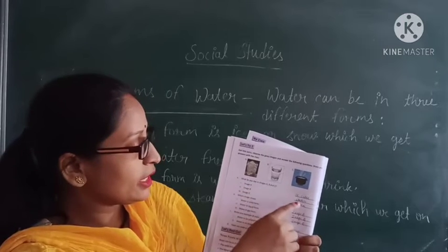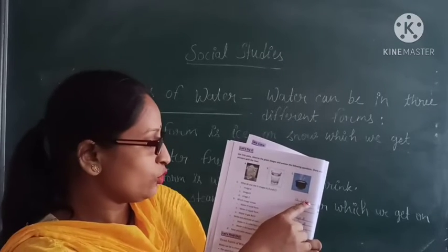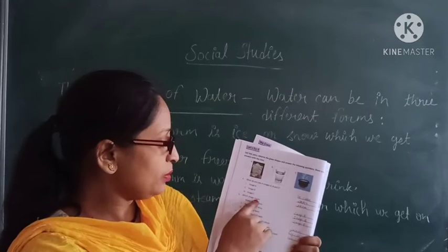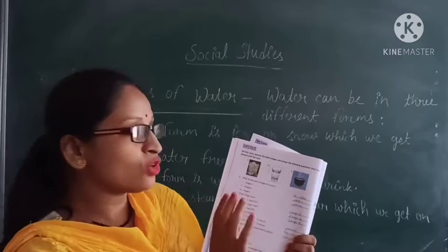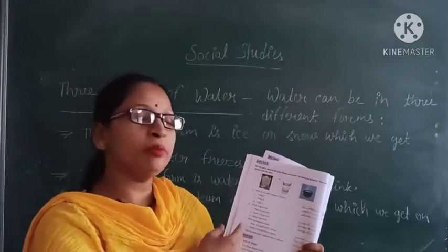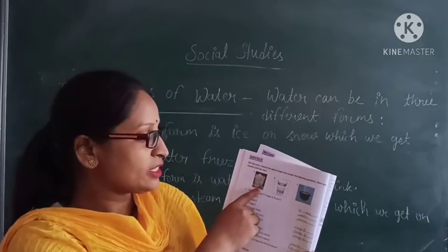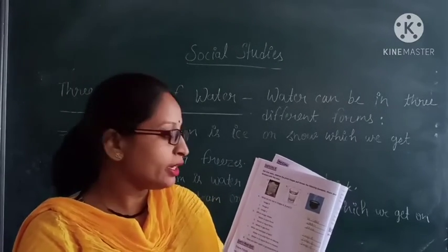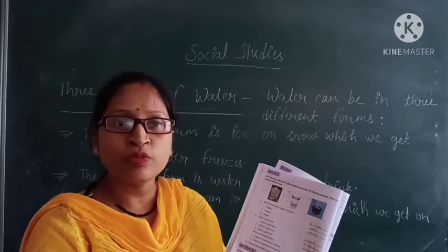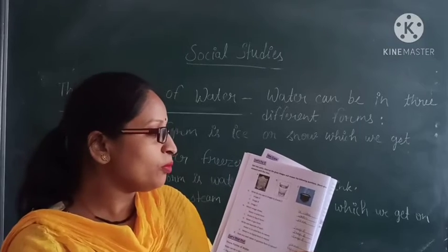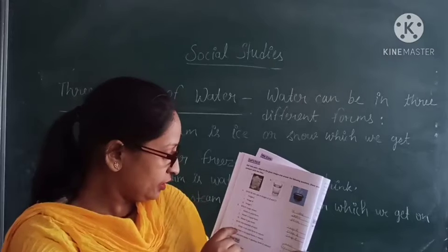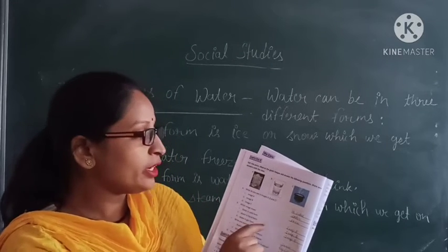Image A is an ice cube. Image B is water. Image C is steam. Water in solid form is in image A. Water in liquid form is in image B. Water in gas form is in image C.